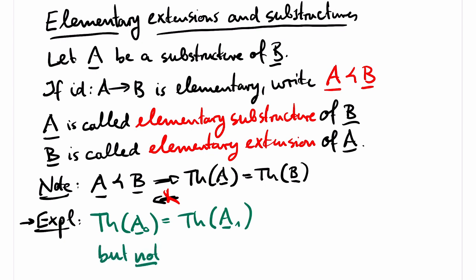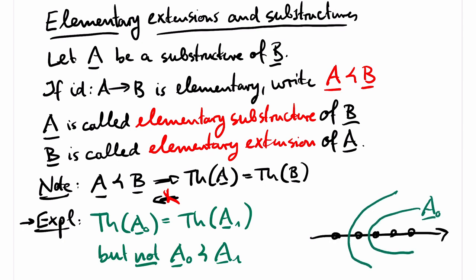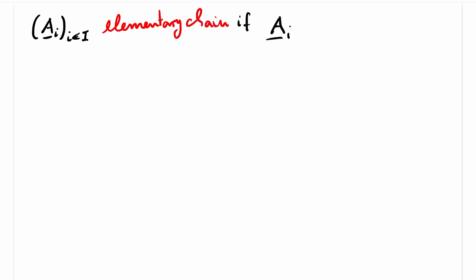Note that if A is an elementary substructure of B, then A and B in particular have the same first-order theory. The converse need not be true. In our previous example, we had that A_0 and A_1 have the same first-order theory, but A_0 is not an elementary substructure of A_1. To see this, consider the formula phi with one free variable which states that x is the smallest element. This formula holds for 0 in the structure A_0, but it does not hold in A_1, so the identity map from A_0 to A_1 is an embedding but not an elementary embedding. A chain A_i is called an elementary chain if A_i is an elementary substructure of A_j for all i < j.